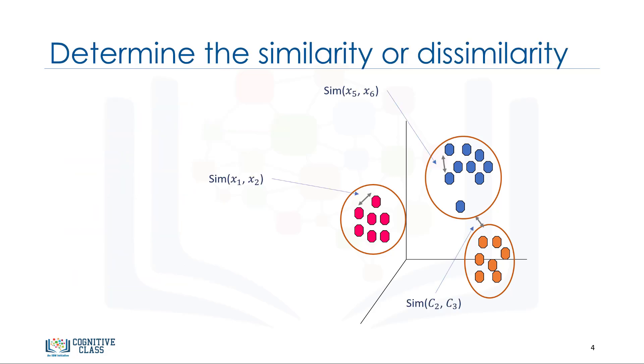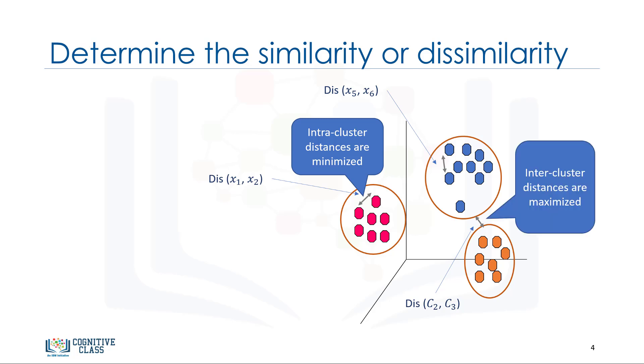Though the objective of k-means is to form clusters in such a way that similar samples go into a cluster and dissimilar samples fall into different clusters, it can be shown that instead of a similarity metric, we can use dissimilarity metrics. In other words, conventionally, the distance of samples from each other is used to shape the clusters. So, we can say k-means tries to minimize the intra-cluster distances and maximize the inter-cluster distances.